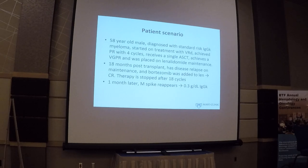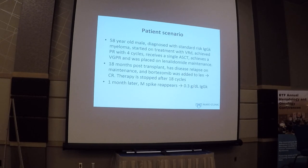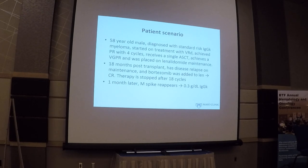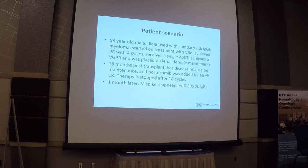The current definition for refractoriness to a drug is defined as either relapsing on therapy or relapsing within 60 days of stopping treatment. That's one confusing thing. The second confusing part is how you define progression. Has this patient actually progressed? Not yet — by definition, you have to have at least a 0.5 gram per deciliter increase in the M-spike before you can call this progression.